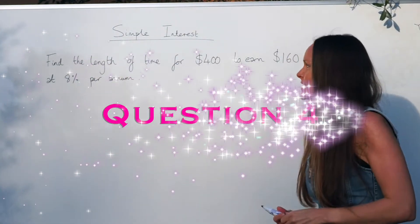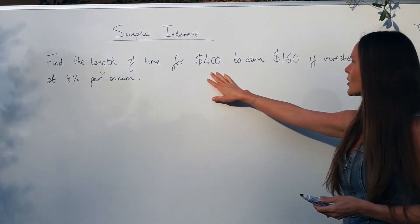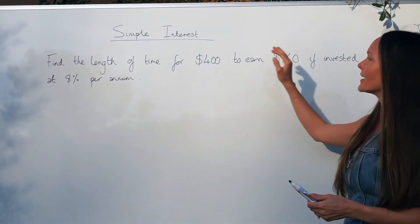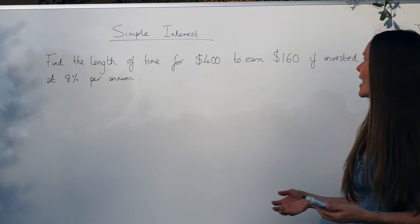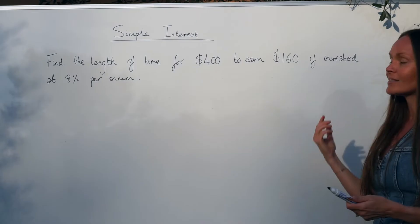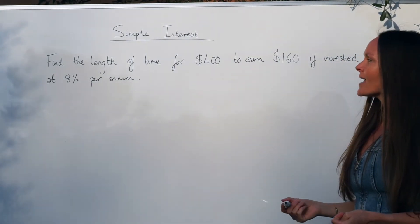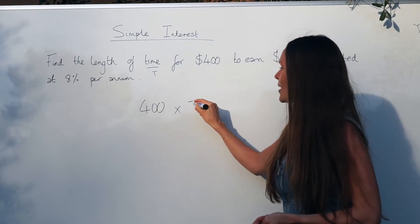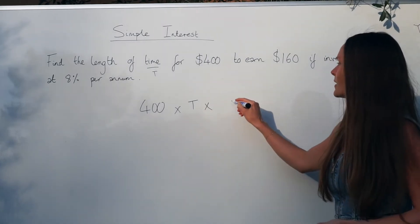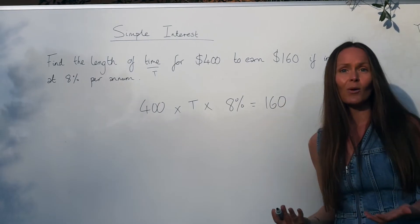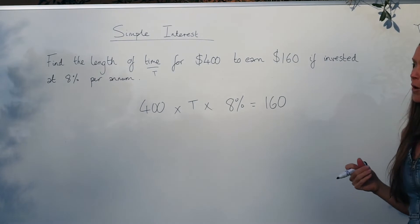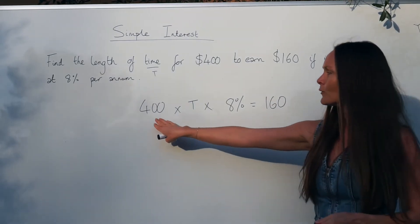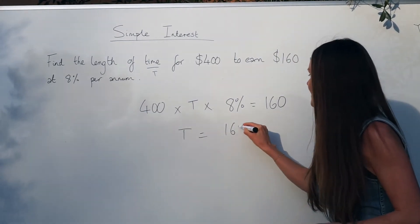In the next question it says: find the length of time — the number of years — for four hundred dollars to earn one hundred and sixty dollars if invested at eight percent per annum. Usually to work out simple interest we multiply the amount of money invested by the number of years (time) and then by the rate of interest to get the simple interest. I'll replace the length of time with the letter T, giving the equation: 400 × T × 8% = 160.